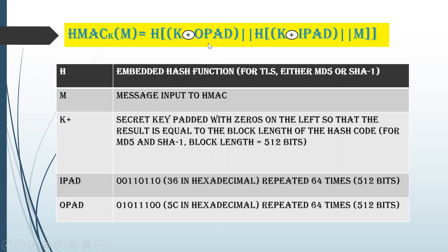opad is 5C in hexadecimal, and this value is repeated 64 times to reach the block length of 512 bits. ipad is 36 in hexadecimal, and this value is also repeated 64 times to reach the complete block length.